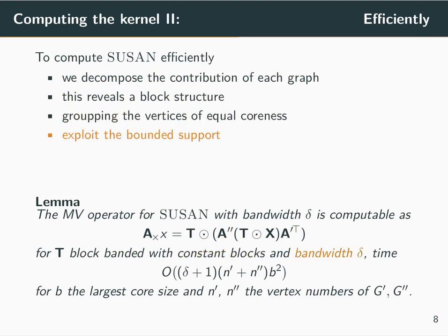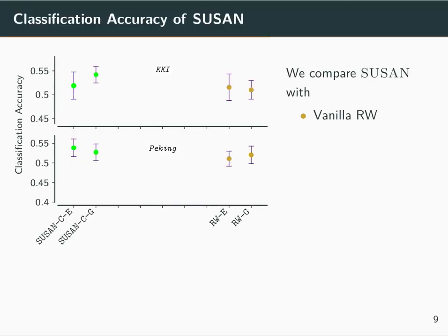Also exploiting the bounded support, we reduce the computational complexity significantly. In our results, we show that when comparing SUSAN with the vanilla random walks, we are remaining better or comparable.